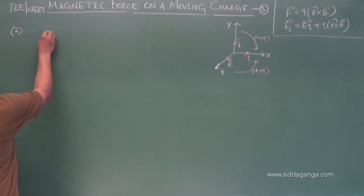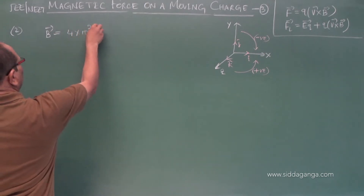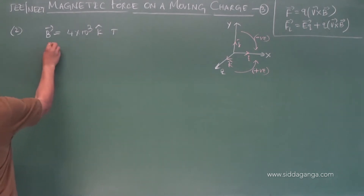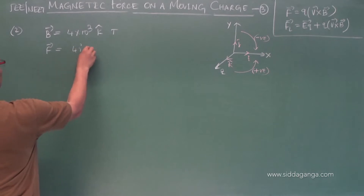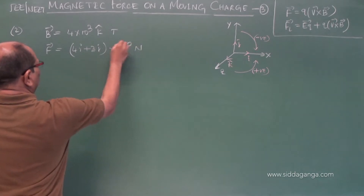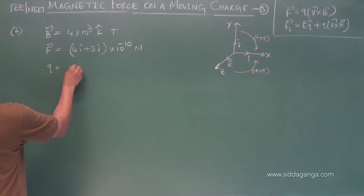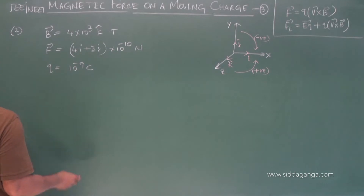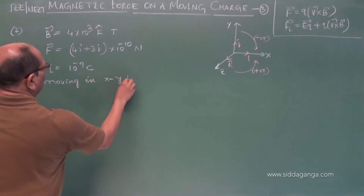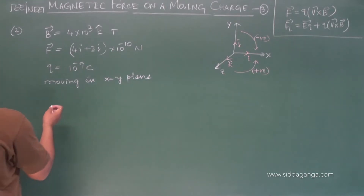Next problem: A magnetic field B = 4 × 10³ T acting in the Z direction exerts a force F = (4I + 3J) × 10⁻¹⁰ N on a charge particle having charge 10⁻⁹ coulomb, moving in the XY plane. Find the velocity of the particle.